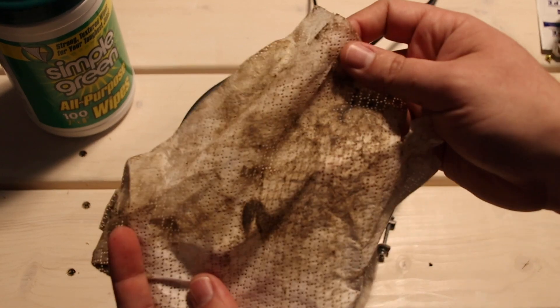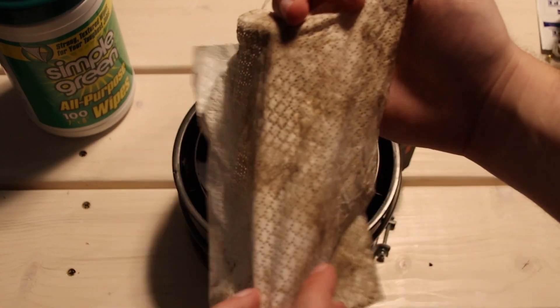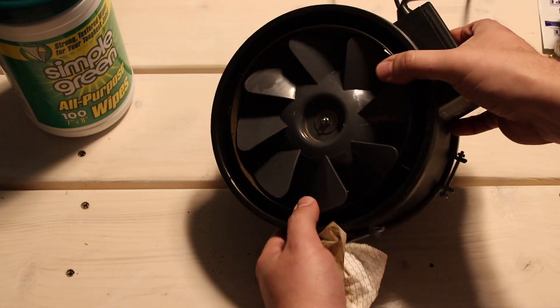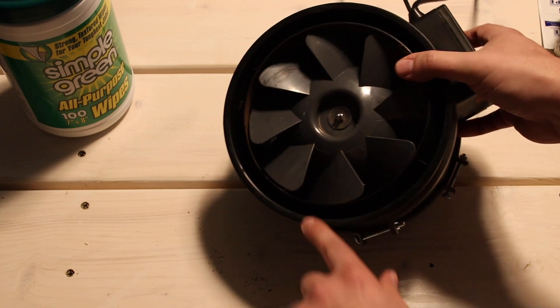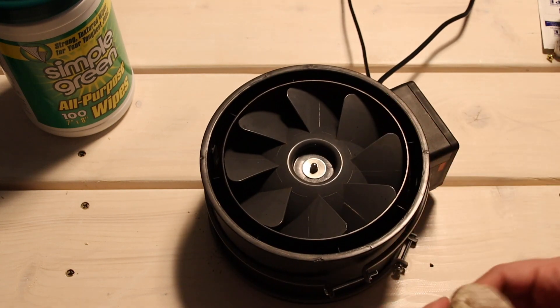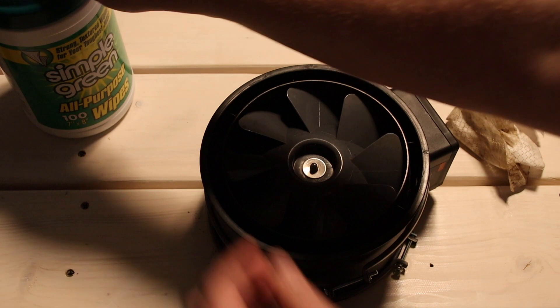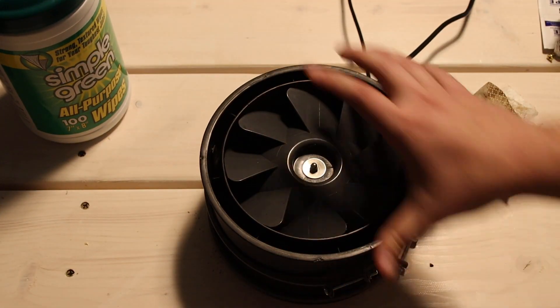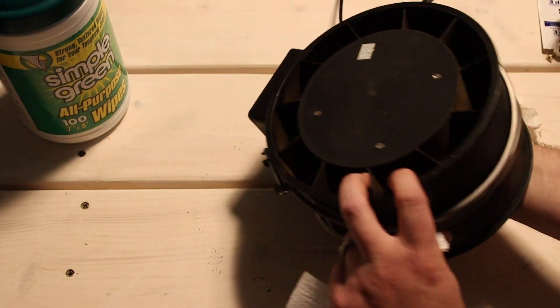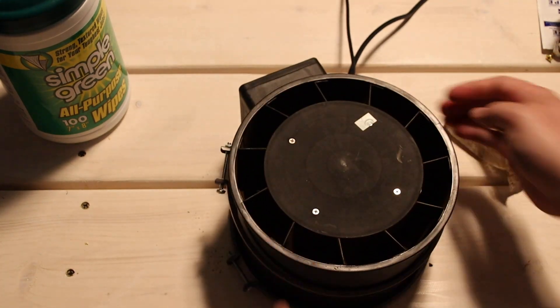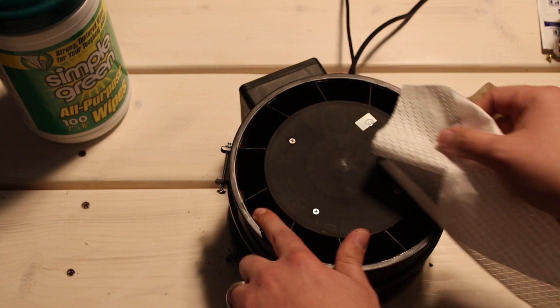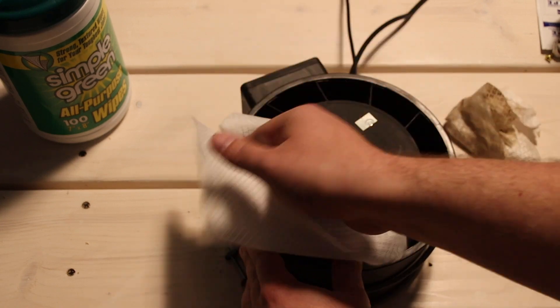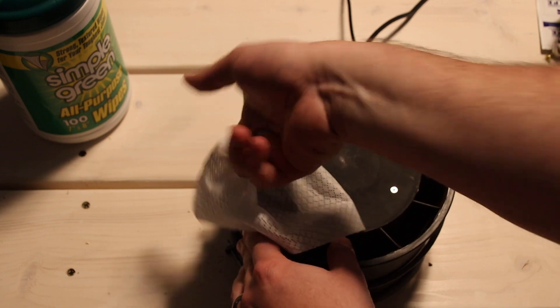So as you guys can see right there is how dirty just the fan blades themselves were. And that's not even the most dirty part. The most dirty part is going to be down inside here underneath the fans, which I know you can't see it, but it is extremely dirty. So what we're going to do is we're going to grab another one of these sheets. And I'm going to see if we can flip it over. Now, there's not really more access, but you can at least go through like these holes right here.